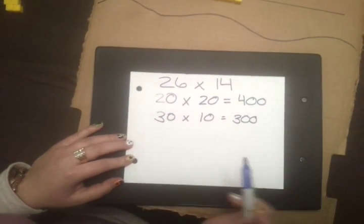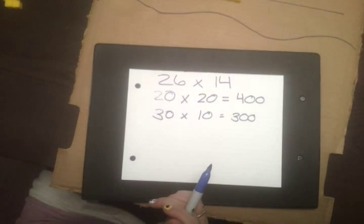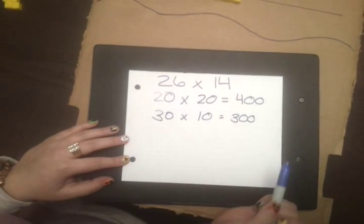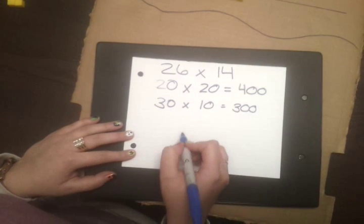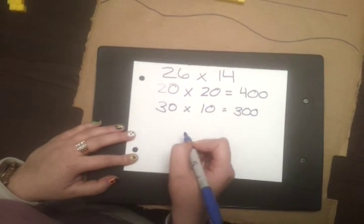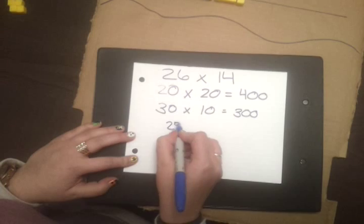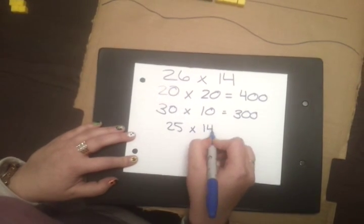So, based on this, we know that our product is going to be between these two numbers. A third way to do this is we can take 26 and round it down to 25 times 14.